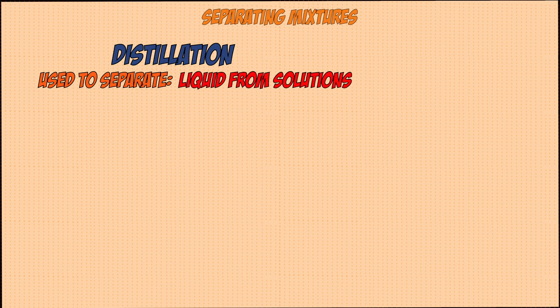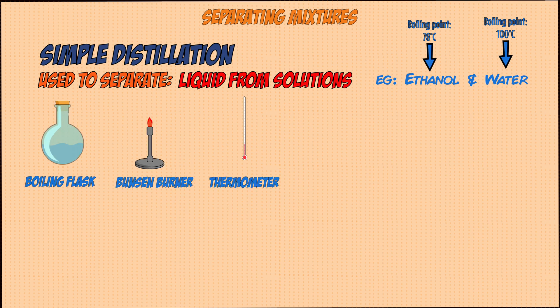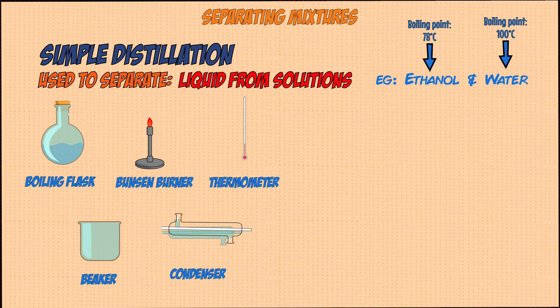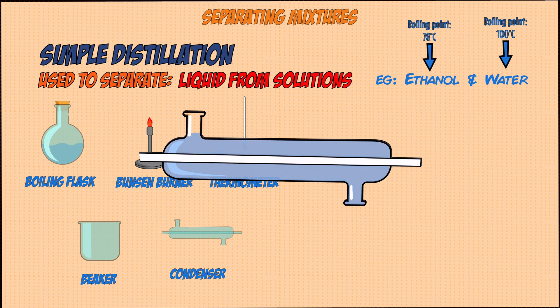Distillation is used to separate liquids in a solution or liquids with different boiling points, and there are two types. The first is simple distillation, used for mixtures of two different liquids. For example, a mixture of ethanol and water — ethanol has a boiling point of 78°C whereas water has a boiling point of 100°C. To separate the two, you'll need a closed boiling flask, a Bunsen burner, a thermometer, a beaker, and a condenser.